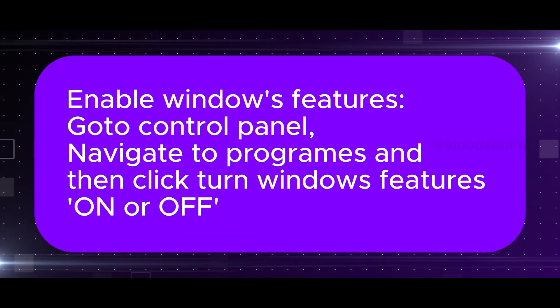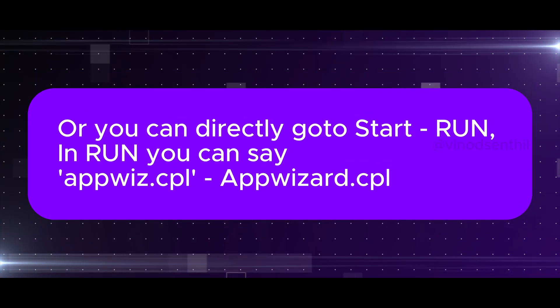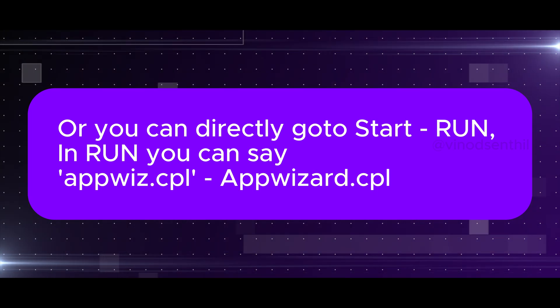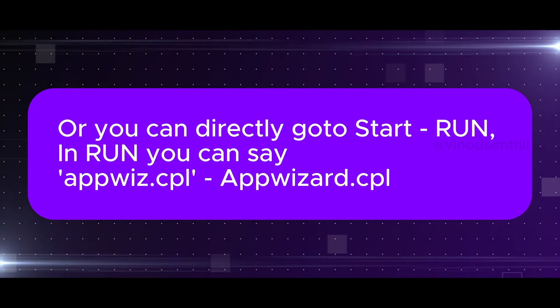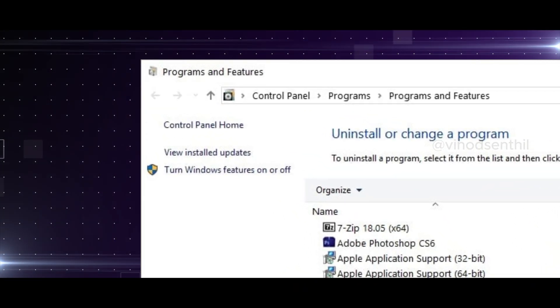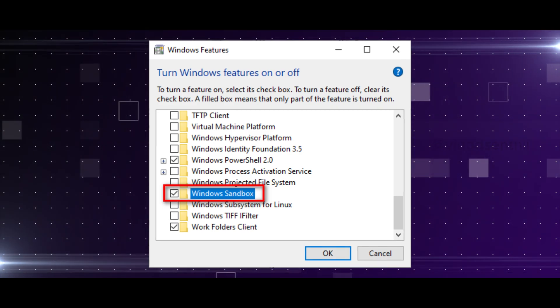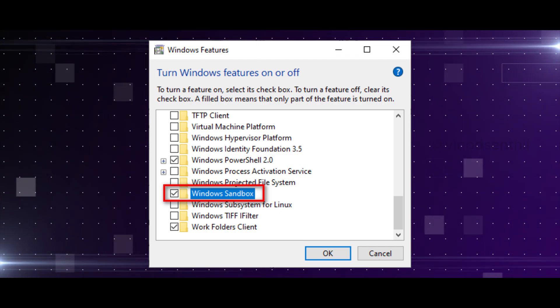Second, enable the Windows feature. Go to Control Panel, navigate to Programs, and then click 'Turn Windows features on or off.' Or you can directly go to Start, then Run, and type appwiz.cpl — that stands for Application Wizard Control Panel. Once you do that, you get a popup, and on the left-hand side you can see 'Turn Windows features on or off.' Clicking that, you will be able to see a list of applications, and one of them will say Windows Sandbox.